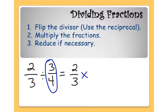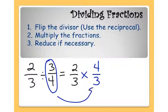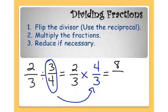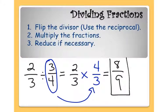Instead of 3 being the numerator, 3 is now going to be our denominator. And instead of 4 being the denominator, 4 is going to be our numerator. So 4 thirds is the flipped version of 3 fourths, or it's also known as the reciprocal. Now all we need to do is multiply: numerator times numerator, 2 times 4 is 8, and denominator times denominator, 3 times 3 is 9. So 2 thirds divided by 3 fourths equals 8 ninths.